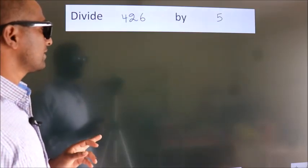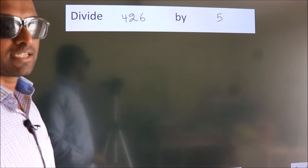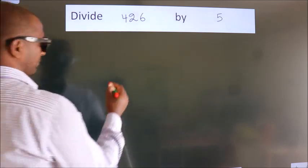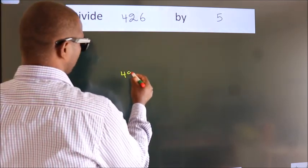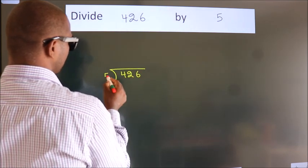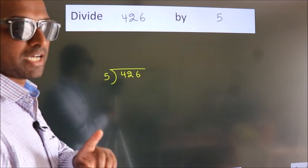Divide 426 by 5. To do this division, we should frame it in this way: 426 here, 5 here. This is your step 1.